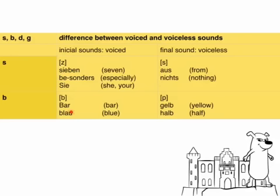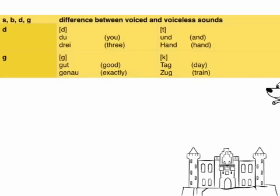Please listen: 'Ba', 'blau' — it's really a B. However, at the end: 'Gelb', 'halb'. Once again: 'Gelb', 'halb'. Don't make the mistake of saying 'Gelbe' or 'Halbe'. If your mother language is French or Italian you might say it that way — it sounds nice, but it's not German.